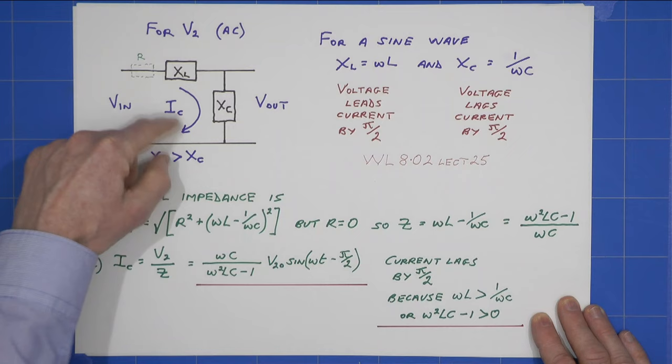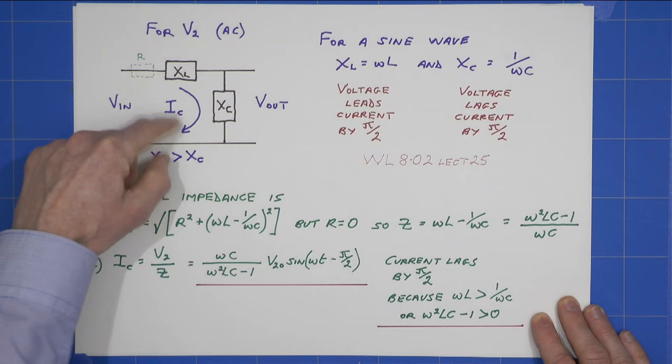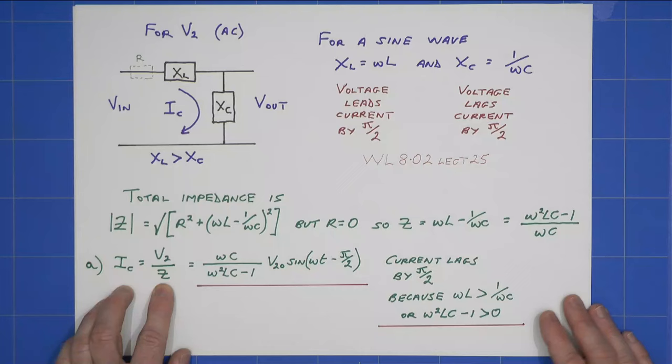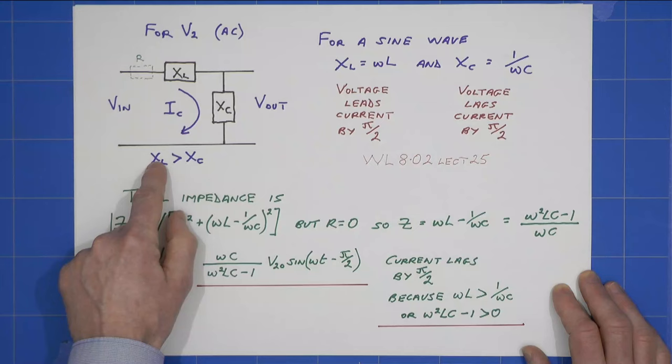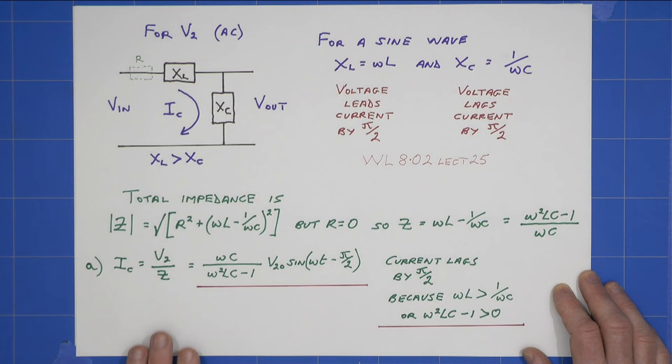the alternating current through here is V2 divided by the impedance, this, which gives us that expression here. And notice, because we're told the inductor dominates, we have a lag, the current lags by pi by 2.